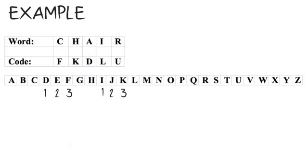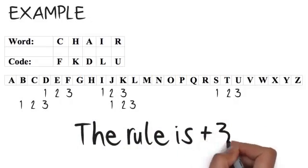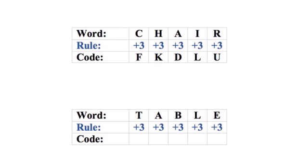The third letter is A, and counting on three letters it becomes D. The fourth letter is I — counting on three letters gives us L. The final letter is R, and by counting on three letters it becomes U. This means the rule is plus three. Word: CHAIR — C H A I R. Plus three: F K D L U.